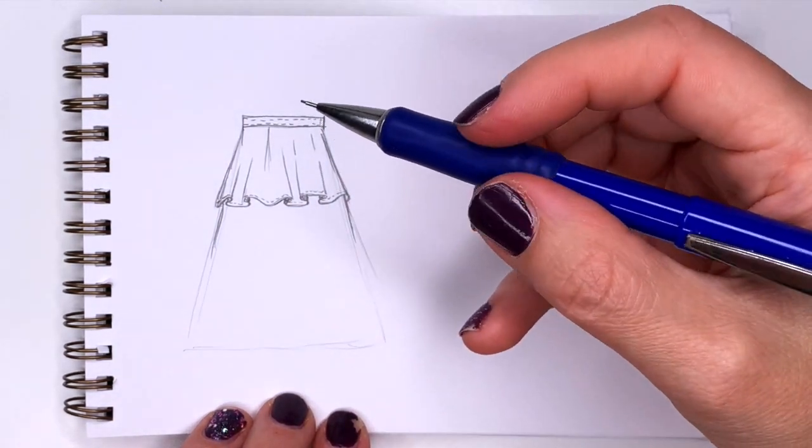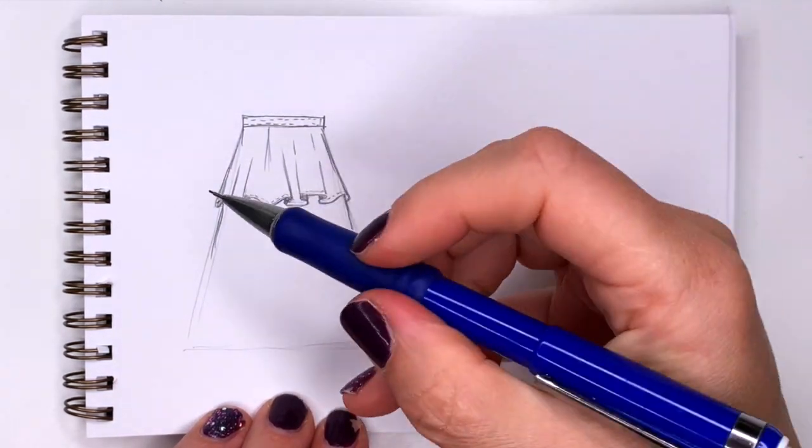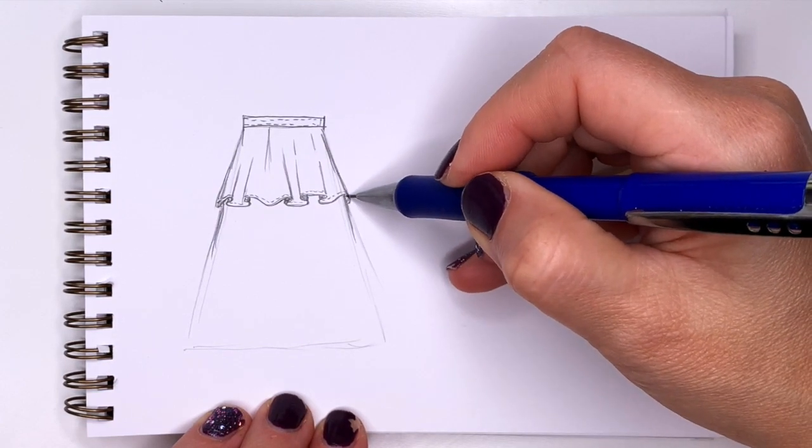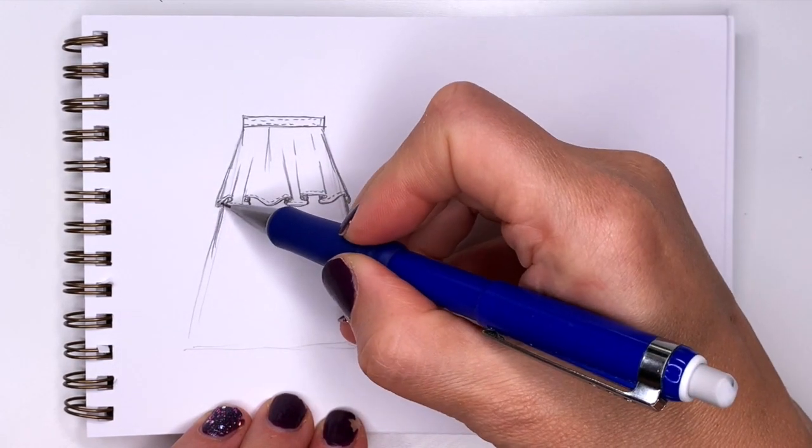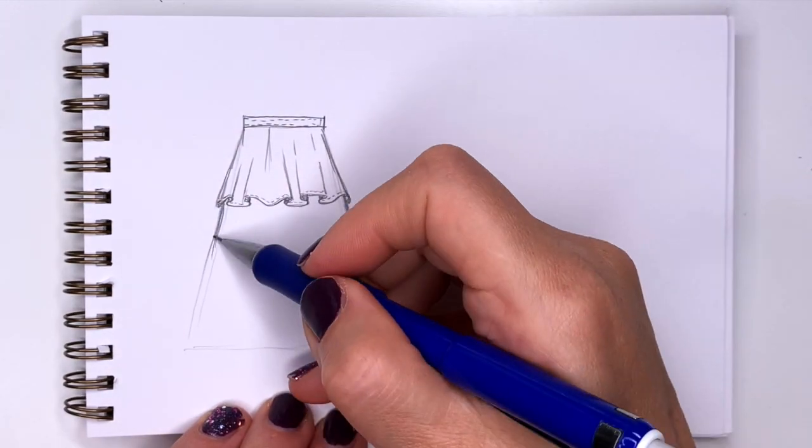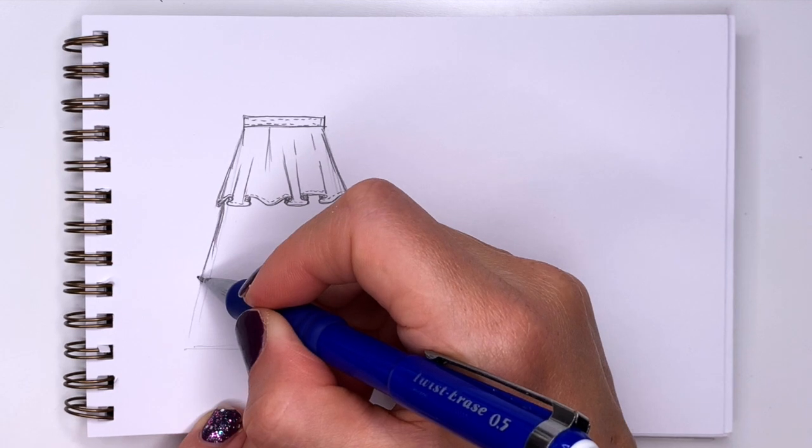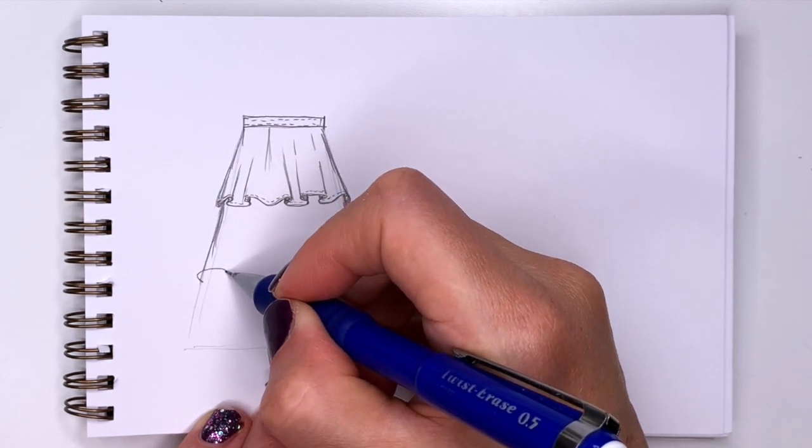Now the second tier. So we're going to go about a third again and see how it comes out from under this and under this. It's going to go further out. And same thing. I'm going to do squiggly lines to show the ruffles.